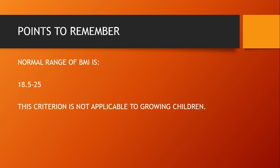अब इस BMI का use क्या करेंगे? Mohan का BMI 22.8 आया — देखते हैं कि यह normal range में है या नहीं। Normal range of BMI होती है 18.5 to 25। अगर BMI 18 से नीचे आता है तो वो underweight है, और अगर 25 से ज़्यादा है तो वो overweight है। ये दोनों health में problematic conditions हैं। Normal range में है तो health condition okay है।